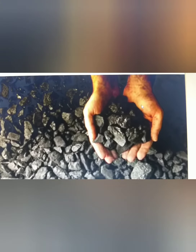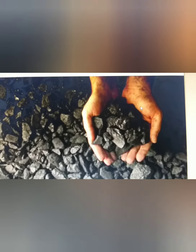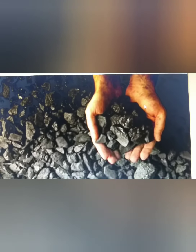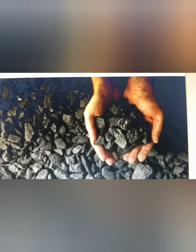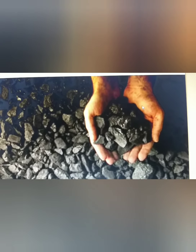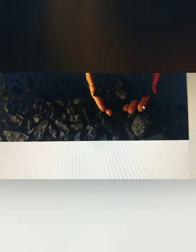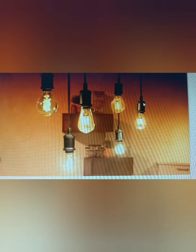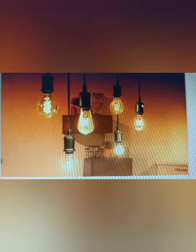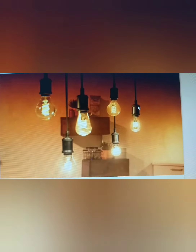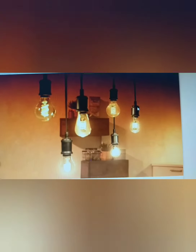Have you ever seen coal? Coal is a black or brownish-black rock. It is the cheapest source of energy. It is used for electricity generation, in homes for cooking, and in other industries. Earlier it was also used in trains. Now these days, electricity and steam engines are seen, but earlier coal was used.